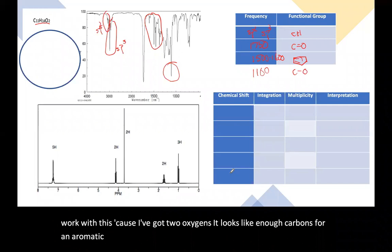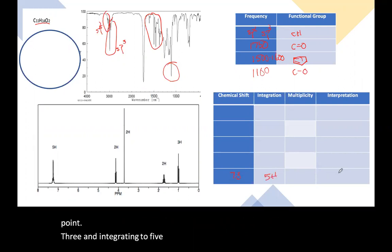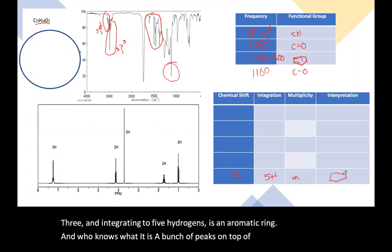I come over here and start at the bottom here at 7.3 and integrating to five hydrogens is an aromatic ring. And who knows what it is. It's a bunch of peaks on top of each other. So I've got an aromatic ring.